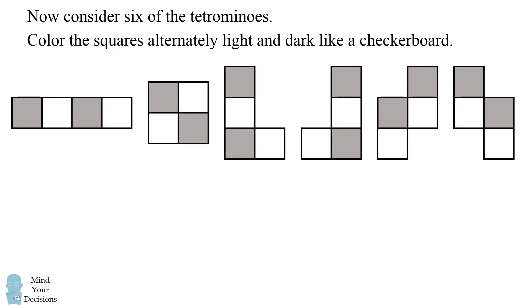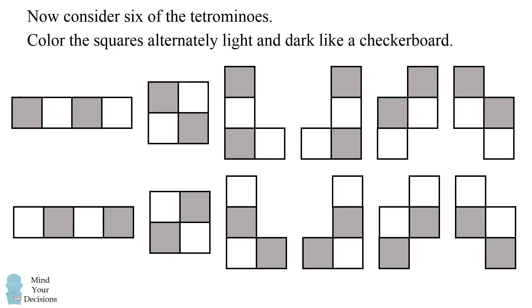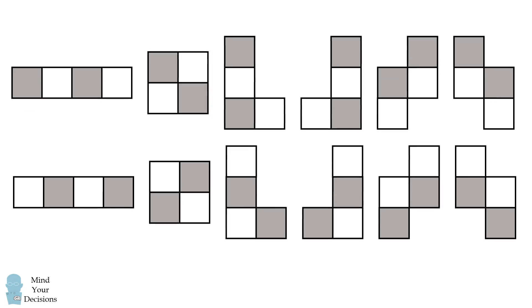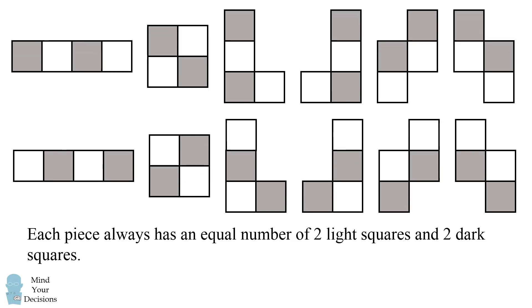This is one way you could color each piece, but there's another way that you could color the pieces. But in either case each piece always has an equal number of two light squares and two dark squares. These six pieces always have 12 light squares and 12 dark squares.